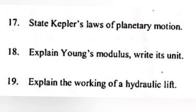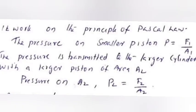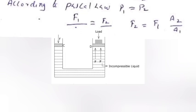Question 19: Explain the work of a hydraulic lift. Answer: It works on the principle of Pascal's law. The pressure on smaller piston, P equal to F1 by A1. The pressure is transmitted to the larger cylinder with the larger piston of area A2. Pressure on A2, P2 equal F2 by A2. According to Pascal's law, P1 is equal to P2. F1 by A1 equal F2 by A2. Figure.